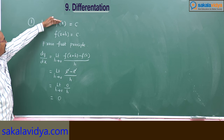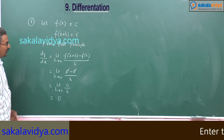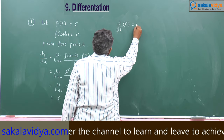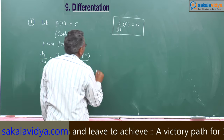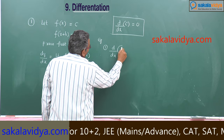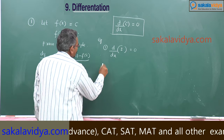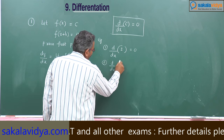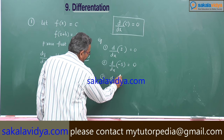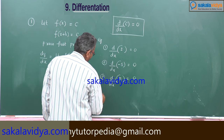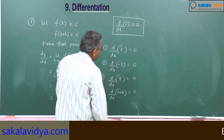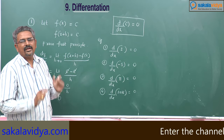That means, since f of x is nothing but y, the differential coefficient of a constant function is always 0. For example: d by dx of 2 is 0, d by dx of negative 5 is 0, d by dx of pi is 0, and d by dx of 2016 is also 0. The differential coefficient of any constant function is 0.